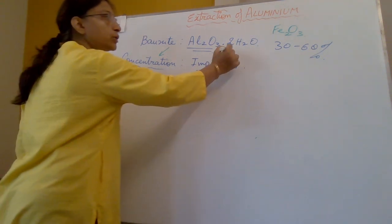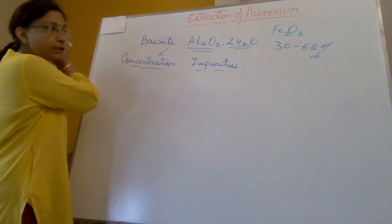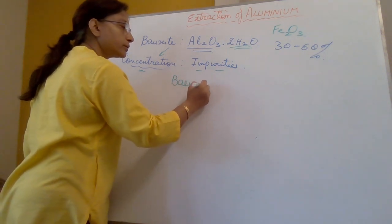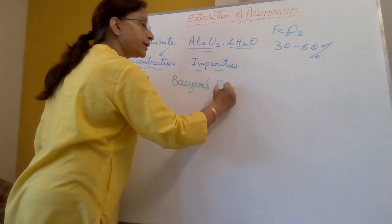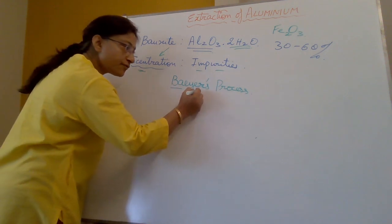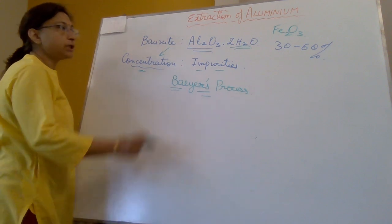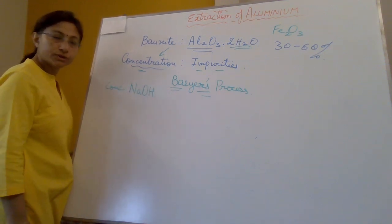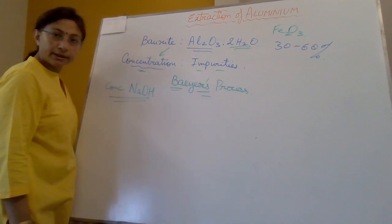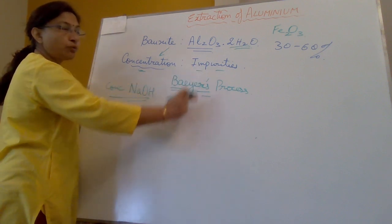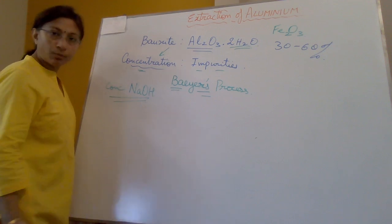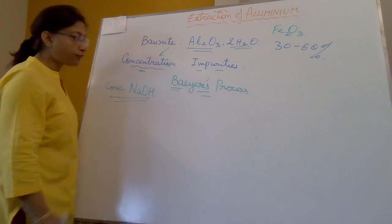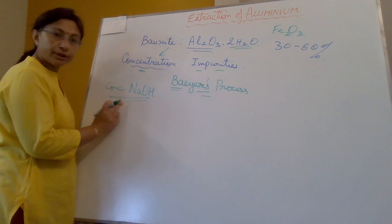These impurities also include water of crystallization. The process we will follow to concentrate this ore is called Bayer's process. The name is very important. Bayer's process involves concentration with the help of concentrated sodium hydroxide. After the ore is crushed and ground, it undergoes concentration for the removal of impurities like ferric oxide, silica, titanium oxide, clay, and many other earthly impurities.